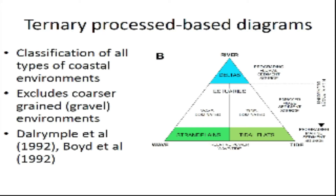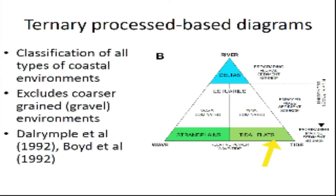Last week, we talked about how coastal depositional environments can be classified based on the relative strength of the three main physical processes affecting sediment transport and deposition along the coast, which are river flow, tidal currents, and waves. These three processes form end-member points on the Dalrymple et al. ternary diagram, and depending on the dominant processes, you get different depositional environments. For example, you get a river-dominated delta; if it's a tide-dominated environment, you get tidal flats; and if it's a wave-dominated environment, you get beach strand plains.